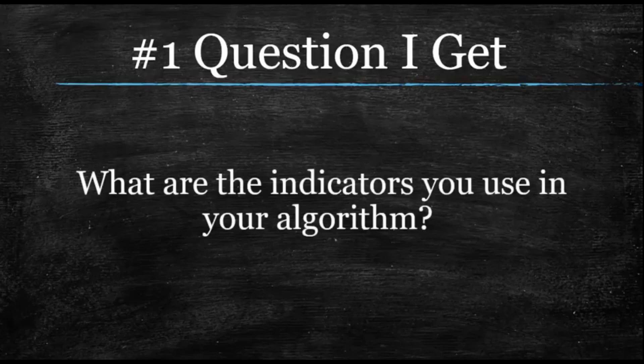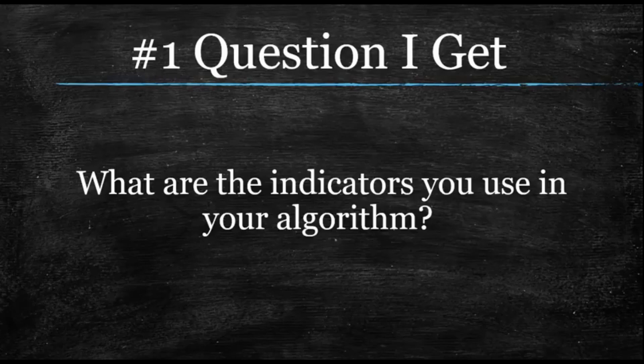People know that I use an algorithm, which is not as daunting as it sounds — it's actually very simple. It's let's say four to six indicators that I follow, and if they all tell me to go long, I go long; if they all tell me to go short, I go short. And they want to know what those indicators are — screw all this learning how to trade nonsense, just tell me what you use and I'll make money.